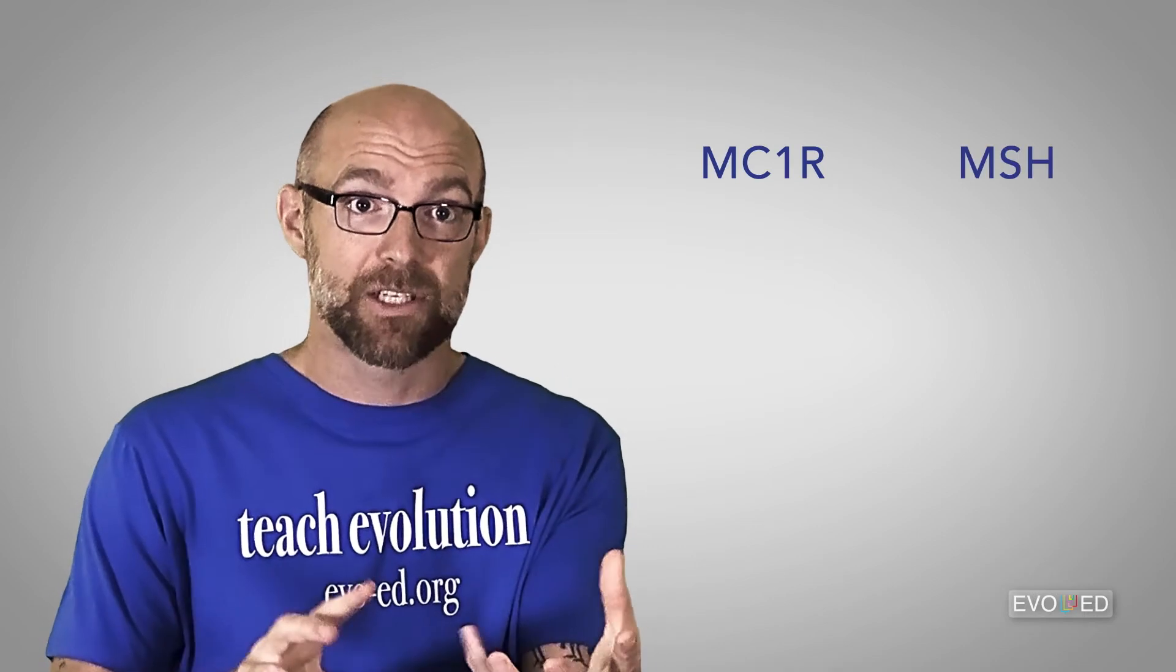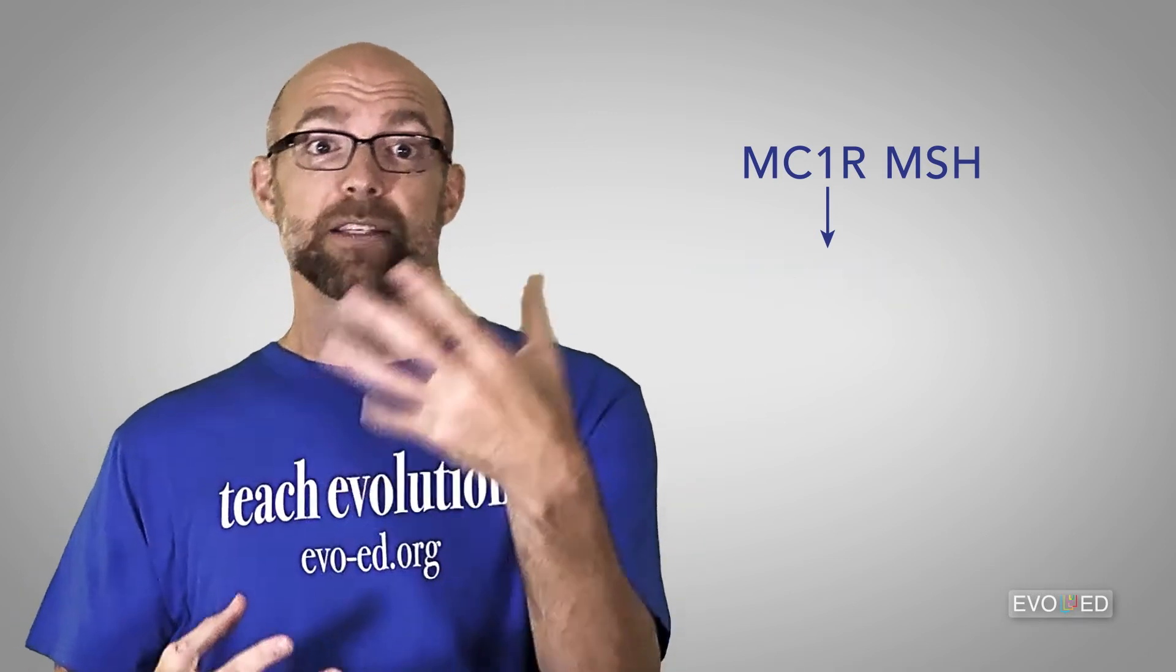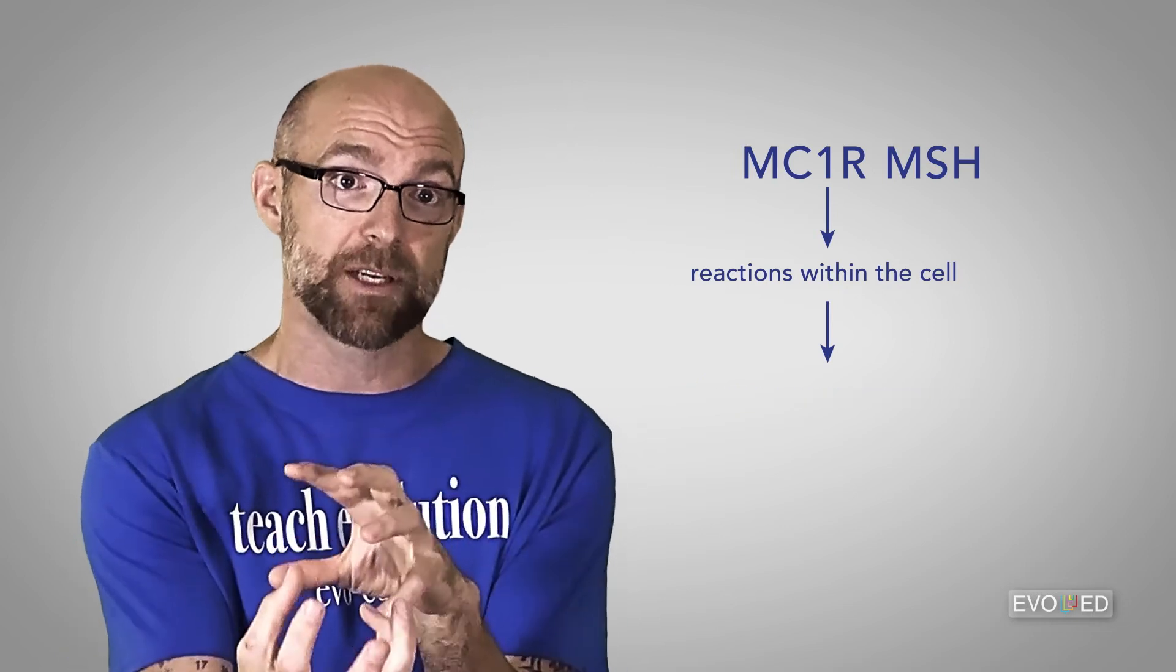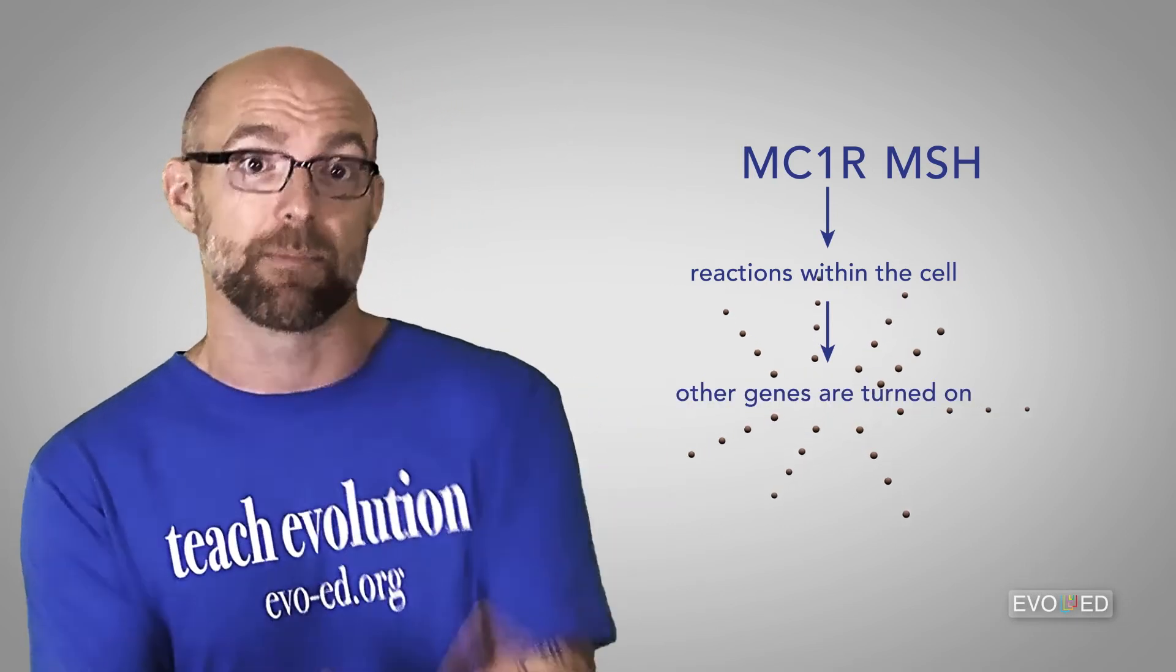So, MC1R and MSH bind to each other. MC1R changes shape in a very specific way, and that sets off reactions within the cell, and it's those reactions that cause a series of other genes to be turned on, and those genes make proteins that make pigments.